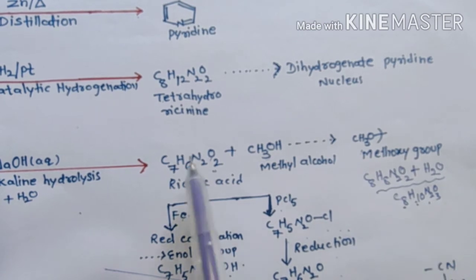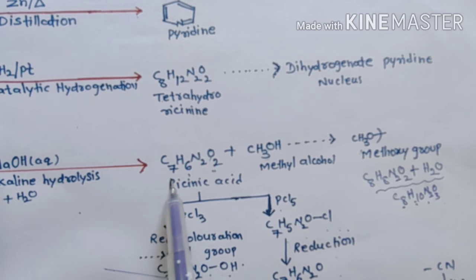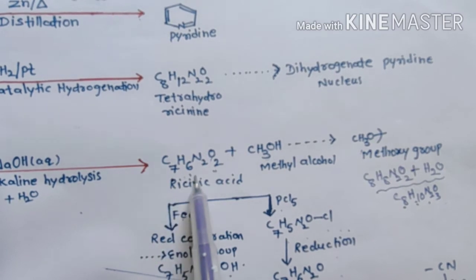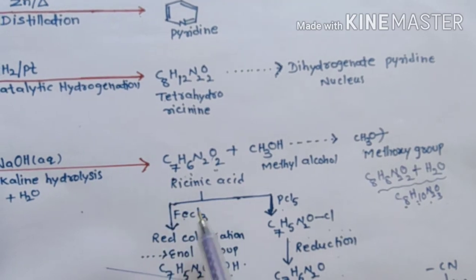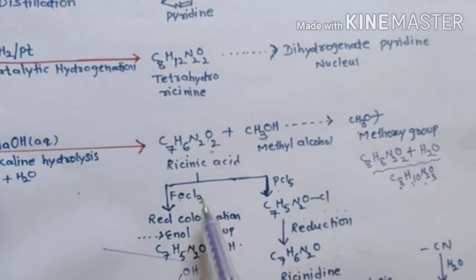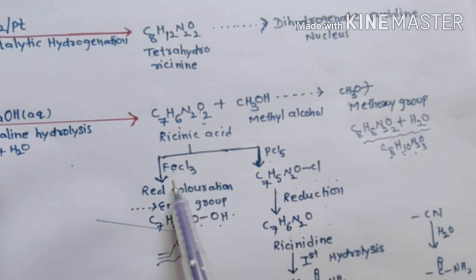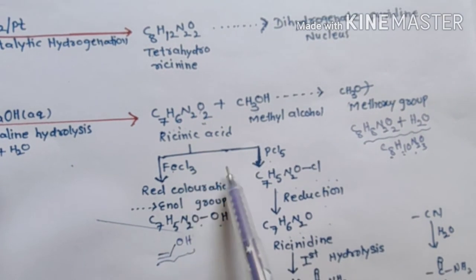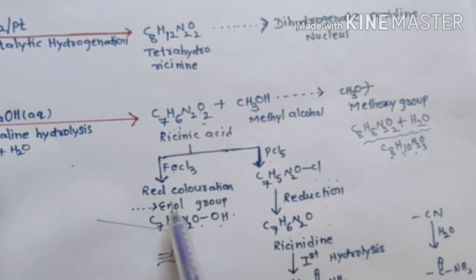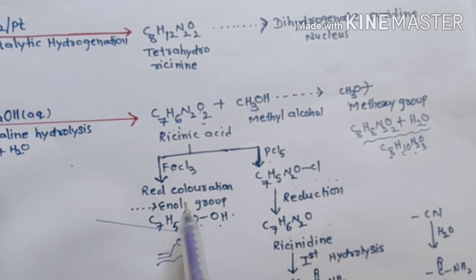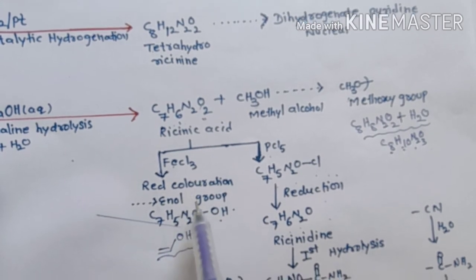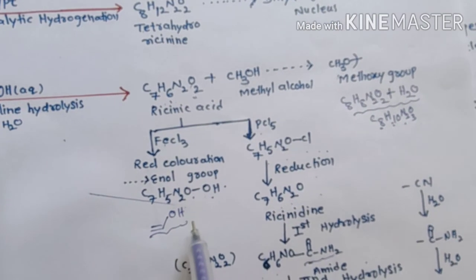The formula of resinic acid is C7H6N2O2. When resinic acid is treated with ferric chloride solution, the solution turns red. This reaction suggests that resinic acid contains one enol group in it.